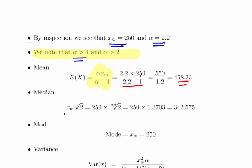The median is Xm times the 2.2 root of 2. If you're trying to figure out how to do that in the calculator, that is 2 to the power of 1 divided by 2.2. So Xm times the alpha root of 2 is 250 times the 2.2 root of 2.